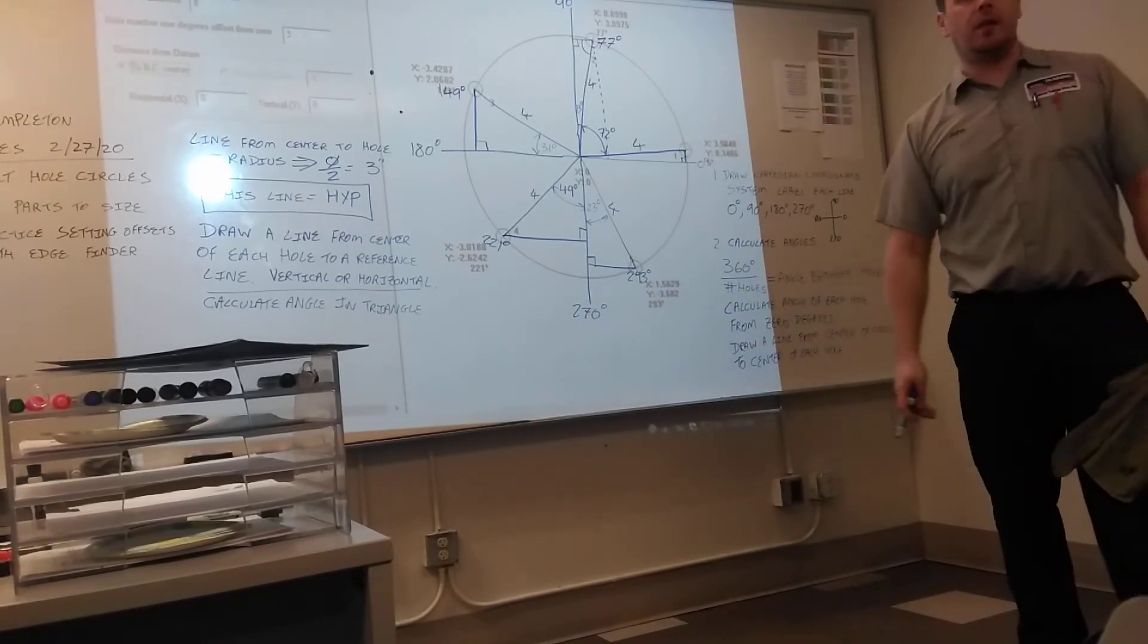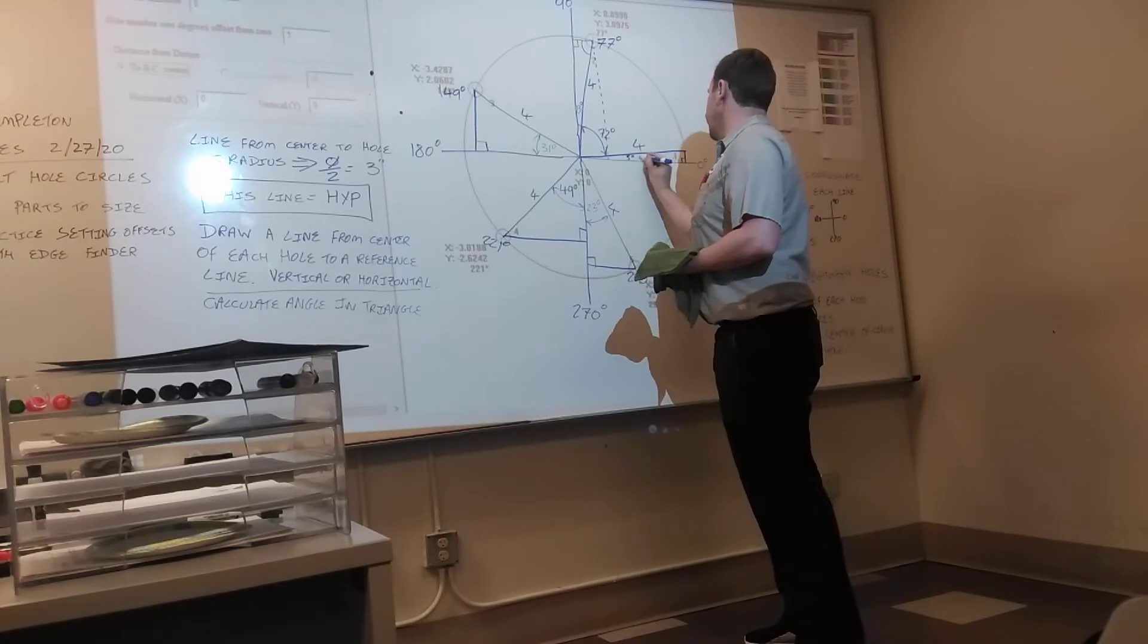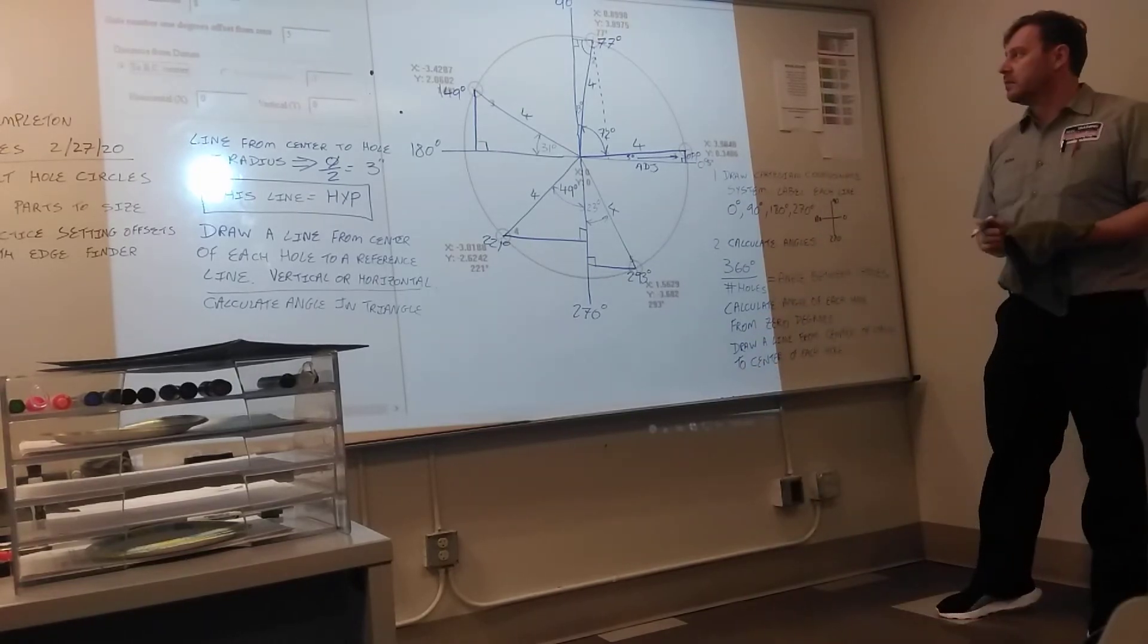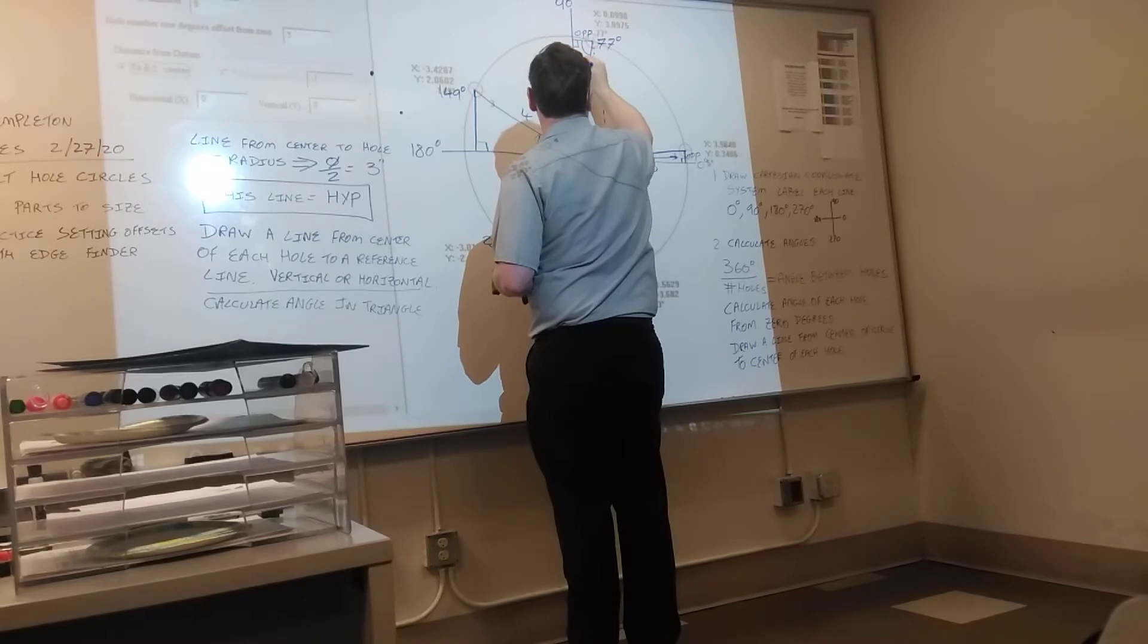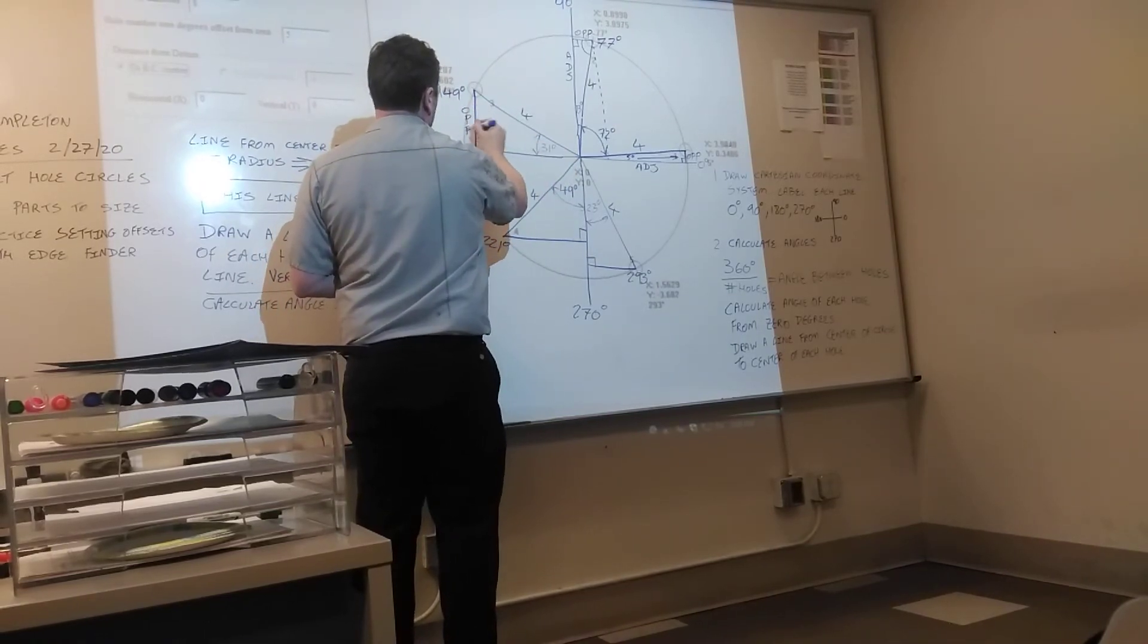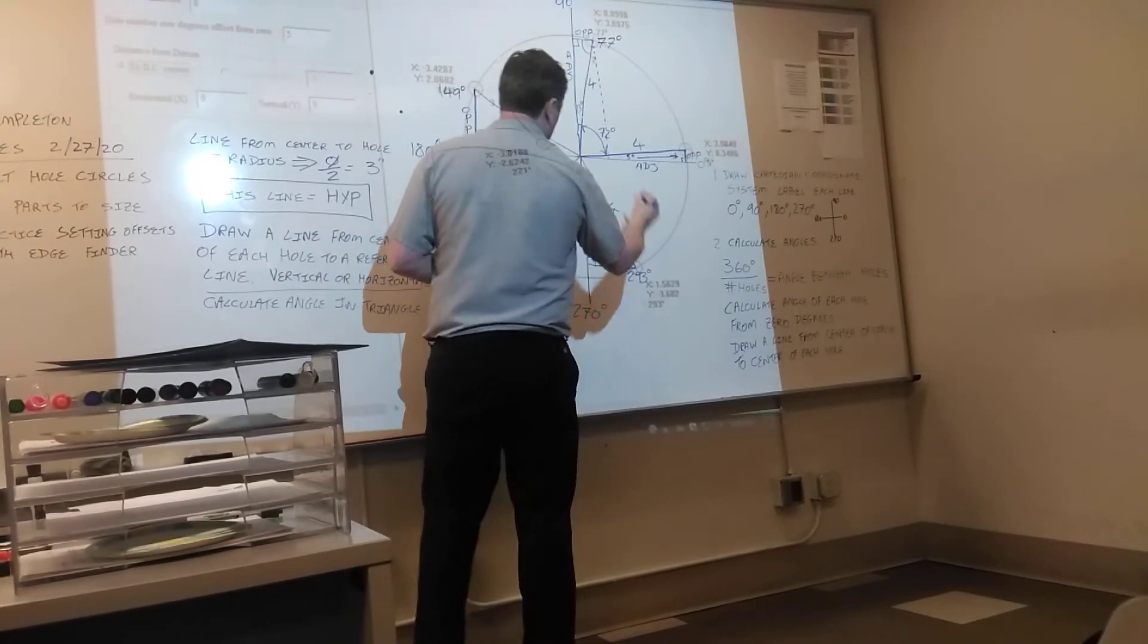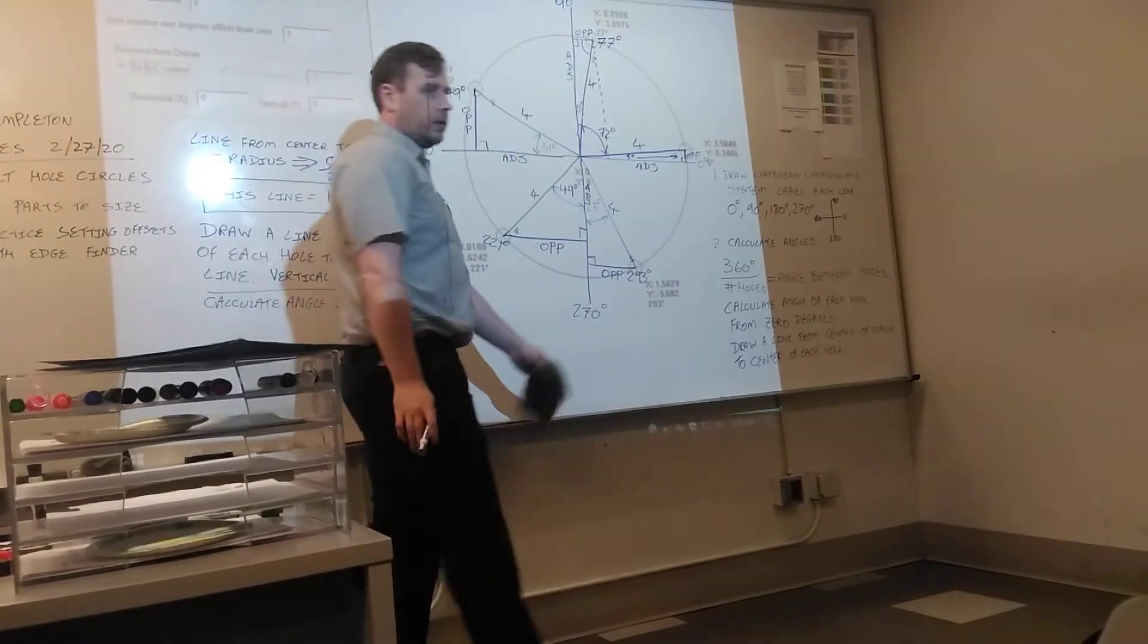And now we can label the opposite and the adjacent. So the first problem. Opposite is all the way to the zero. Hypotenuse is where the four is. And the adjacent is at the bottom. 13 is the reference angle. So we've got opposite, hypotenuse, and adjacent. 31 is the reference angle. So we've got opposite, adjacent. 49 degrees. Opposite. And then 23 degrees, opposite.